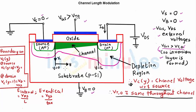Y can take values from 0 to L. We assume the threshold voltage is nearly constant throughout the channel. Two boundary conditions apply: VC(Y=0) at source equals VS which is 0, and VC(Y=L) at drain equals VDS, since VDS = VD − VS and VS = 0, so it equals VD.